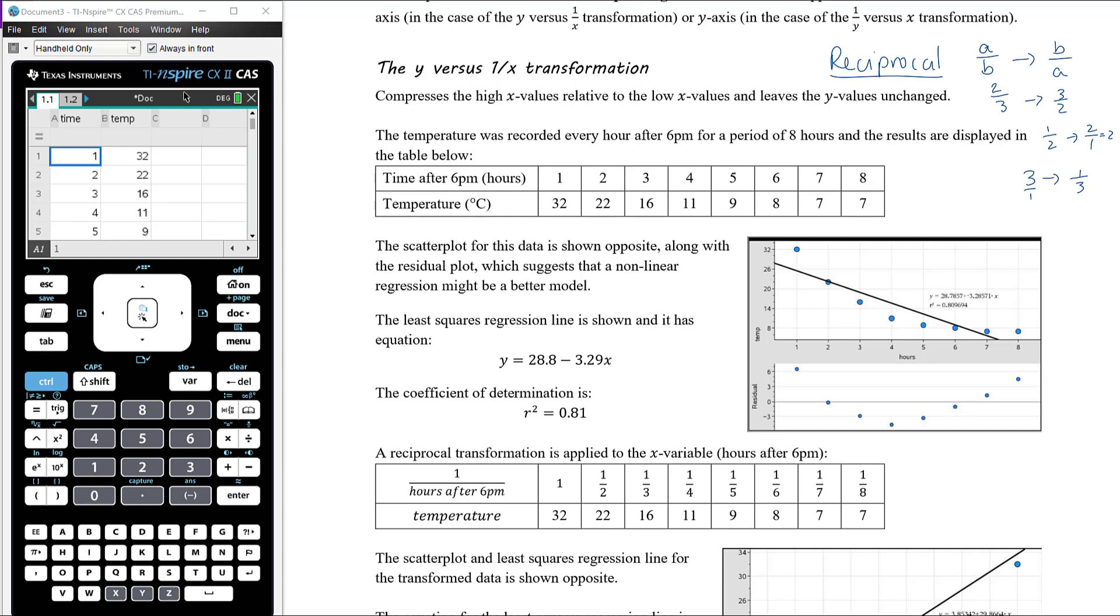Temperature was recorded every hour after 6 pm for a period of 8 hours and the results displayed in the table below. The scatter plot for the data is shown along with the residual plot, which suggests that a non-linear regression might be a better model.